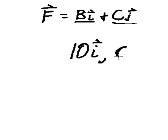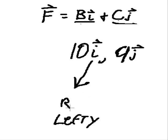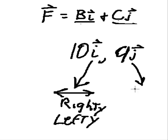And, let's say this was 9 in the j direction. And, i direction is like saying in the righty lefty direction. J is like saying in the upsy downsy direction.